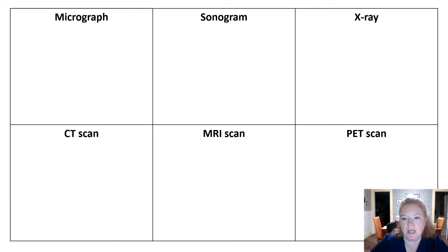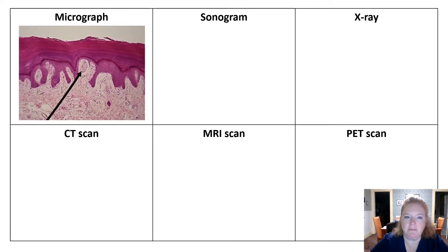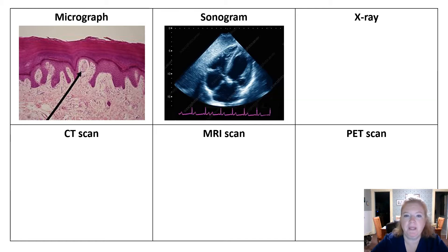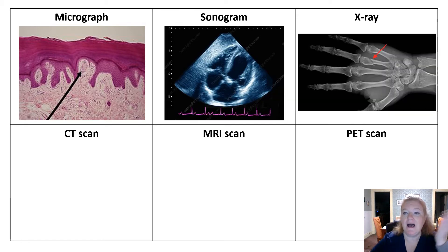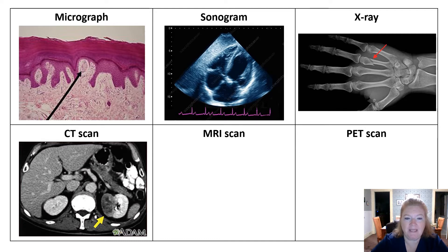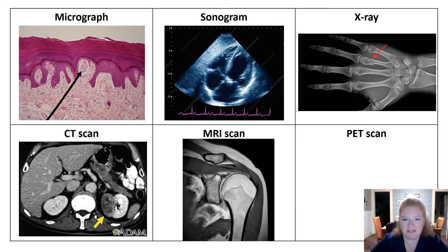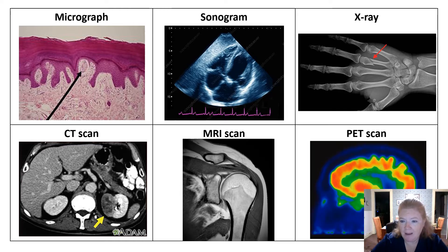Let's look at examples. Micrograph — microscope. Sonogram — sound waves. X-ray — electromagnetic radiation. CT scan — rotating series of x-rays. MRI scan — magnetic field. PET scan — function.